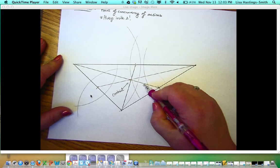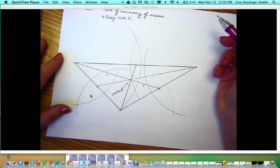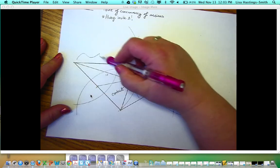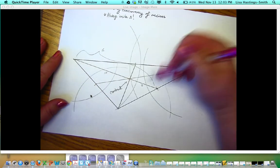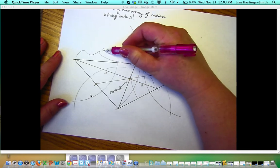For example, if this was five, this length would be double that, 10, making the whole thing 15. And notice that five is one-third of 15, and 10 is two-thirds of 15.